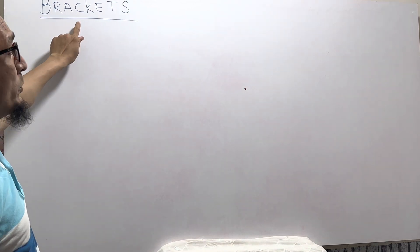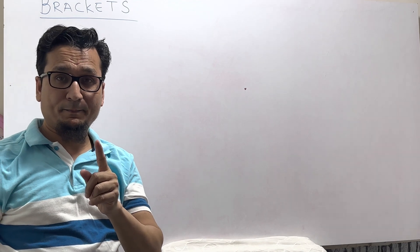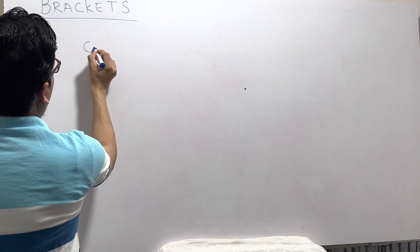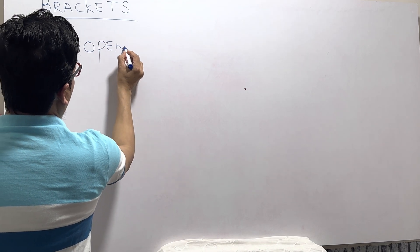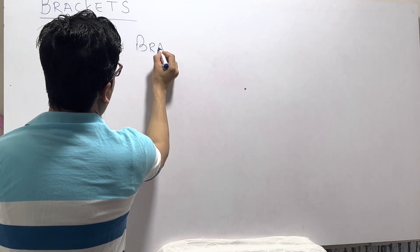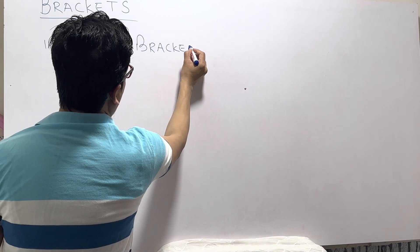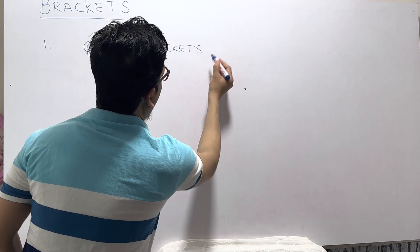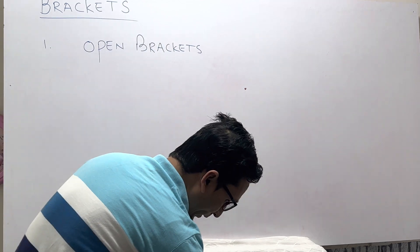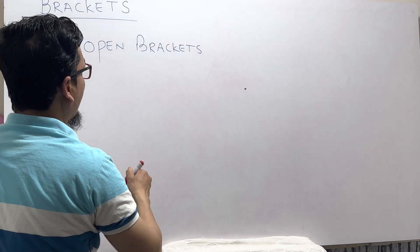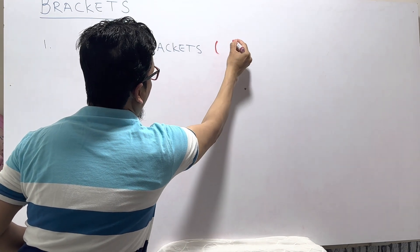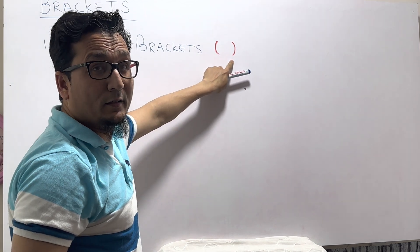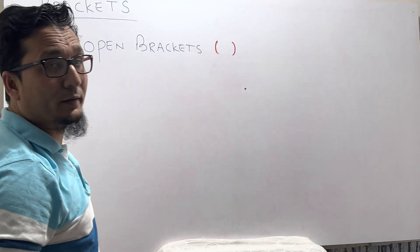We will use two types of brackets. Number one, we will use the open bracket. The open bracket is represented like this — when you see this symbol, you must understand that this is an open bracket.